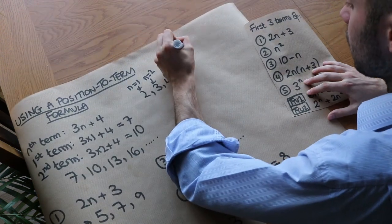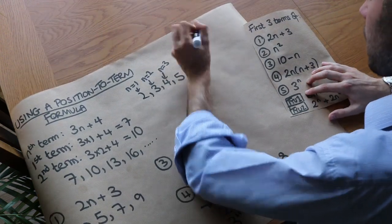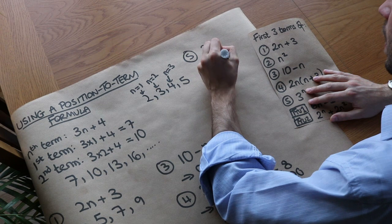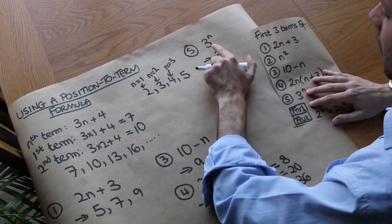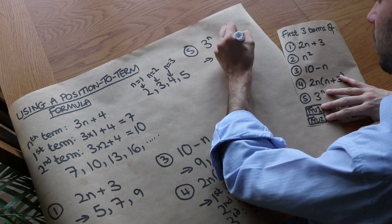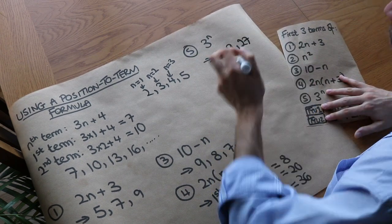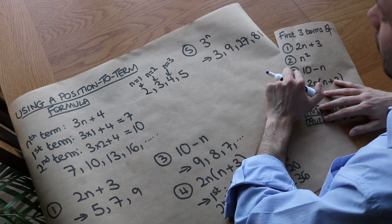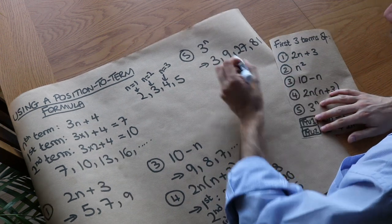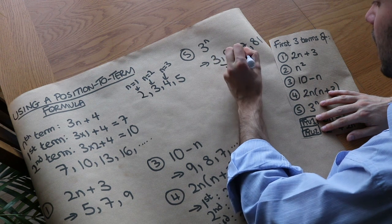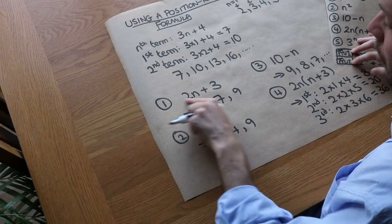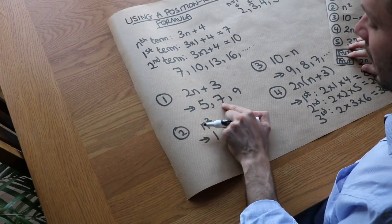Finally, we have 3 to the power of n. The first term is 3 to the power of 1, which is 3. The second term is 3 to the power of 2, which is 9. The third term is 3 to the power of 3, which is 27. And the fourth would be 3 to the power of 4, which is 81. If you generate a sequence using this kind of expression, there's generally a pattern — here we're multiplying by 3 each time. For 2n plus 3 earlier, we were adding 2 each time.